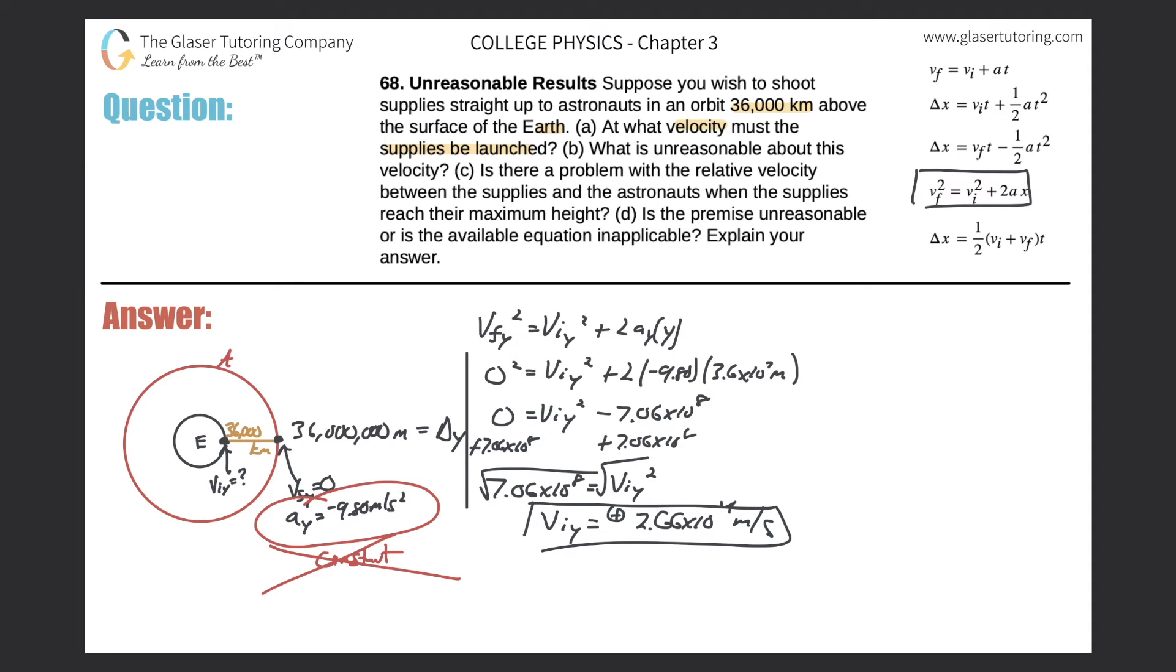The velocity of the astronauts relative to the package will be something, right? It's going to be probably some large number. So how do you now catch essentially an object that is moving, I don't know...